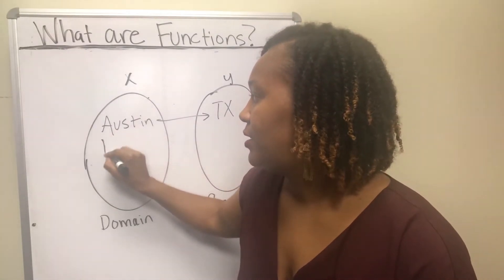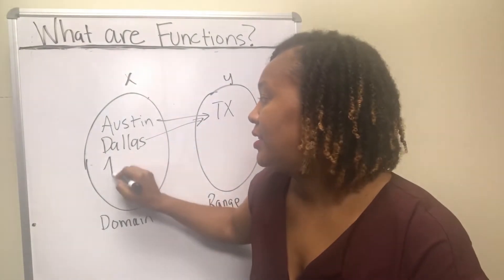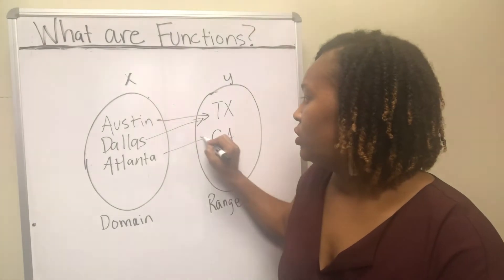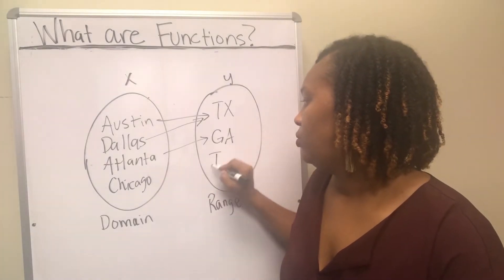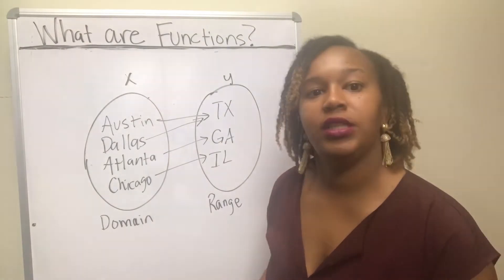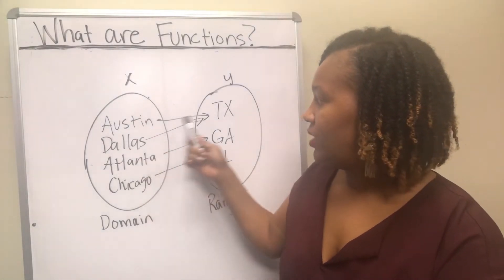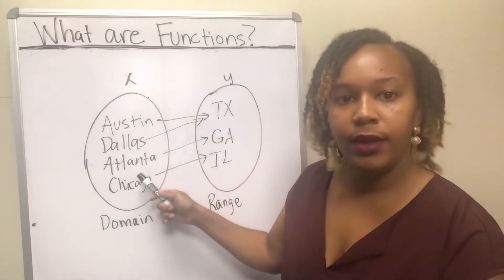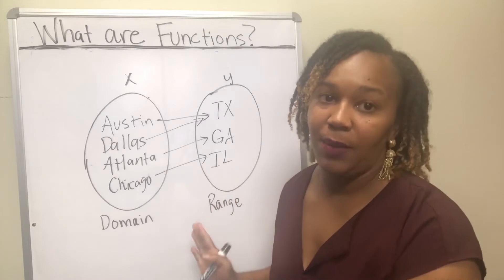Dallas maps to Texas. Atlanta maps to Georgia. And Chicago maps to Illinois. So if these were the only cities and states in my relation, would this represent a function? Does each element of my domain map to exactly one element of my range? Austin maps to one, Dallas maps to one, Atlanta maps to one, and Chicago maps to one state. Therefore, this example illustrates a function.